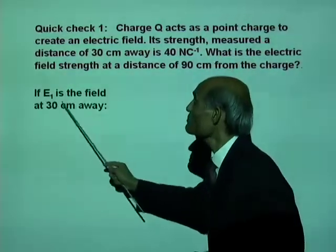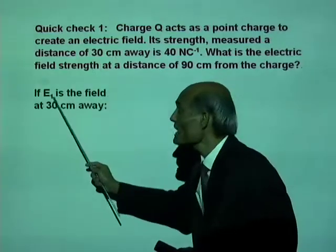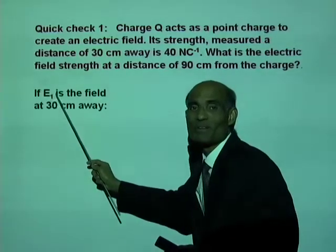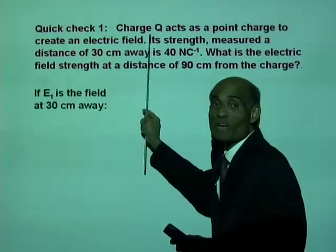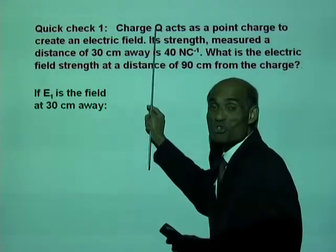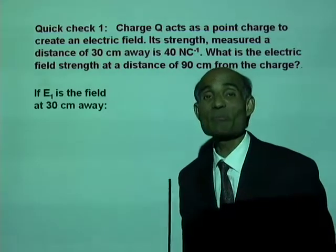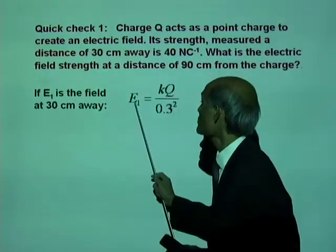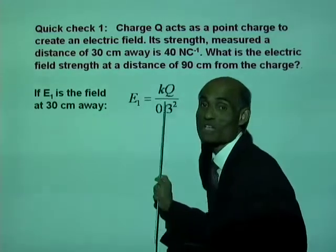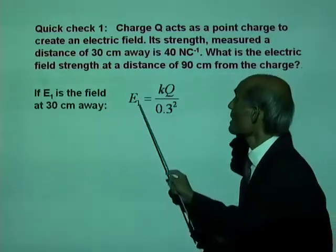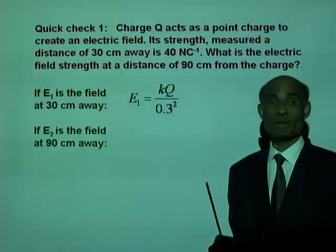If E1 is the field at 30 cm away from this charge, can you write an equation for E1? E1 is the electric field at a distance 30 cm away from the charge Q. Electric field at a point is KQ divided by R squared. So E1 is KQ divided by R. R is 30 cm, 0.3 squared. So I have E1 equal to KQ divided by 0.3 squared. Alright?